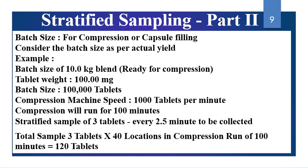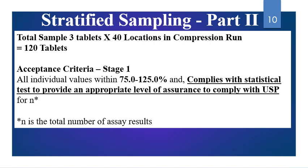As described in Part 1, the compression run or capsule filling run is divided into 40 locations with 3 tablets taken from each location at defined time intervals. The acceptance criteria require all individual values to be within 75–125% and compliant with the statistical test to provide an appropriate level of assurance for USP content uniformity. With 40 locations and 3 units each, you end up with 120 assay values of tablets or capsules.